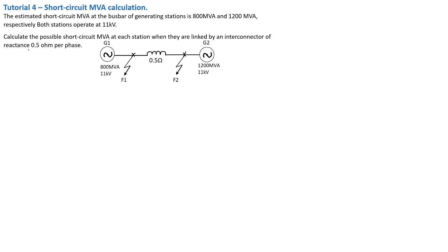They're asking us to calculate the possible short circuit MVA at each station, when they are linked by an inter-connector of a reactance of 0.5 ohm per phase. This is an inter-connector reactor.